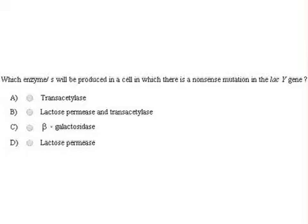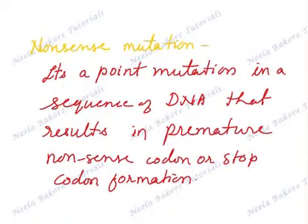To answer this question, let us first understand what happens in a nonsense mutation. A nonsense mutation is a point mutation in a sequence of DNA that results in a premature nonsense codon, or stop codon, formation.